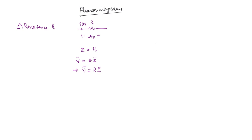That is why we get a purely real component for a resistor. In the phasor diagram, if this is V̄, then Ī is going to have magnitude V̄/R and the same phase. Both of them can also have a particular common phase. This is the phasor relationship for a resistance.